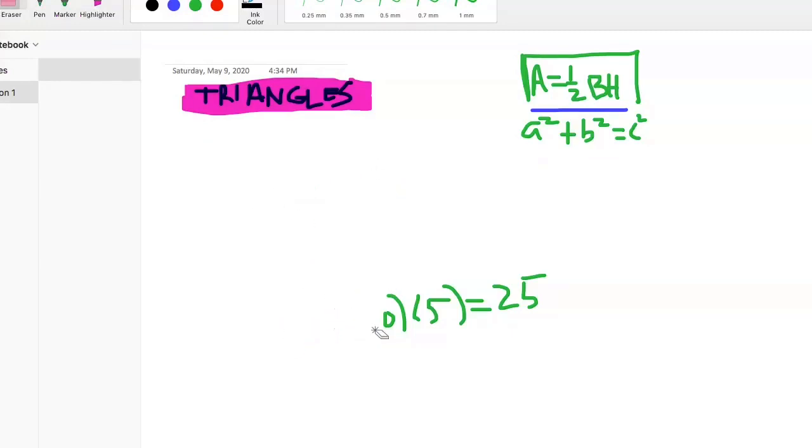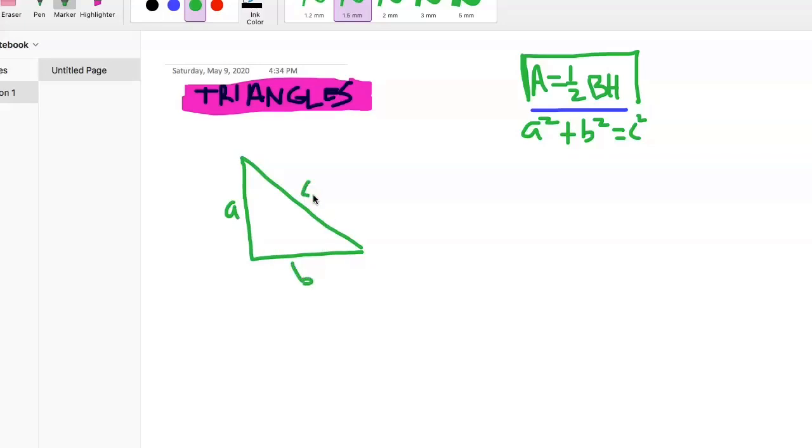And one more. The a squared plus b squared equals c squared - that's for Pythagorean theorem. So we have that's a, that's b, this is c. It's only true for a right triangle - if it's not a right triangle they're not going to ask you that.